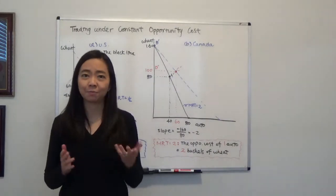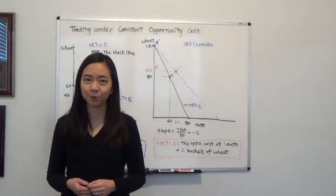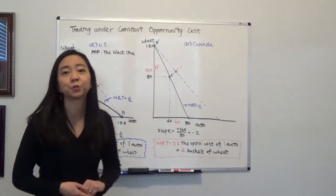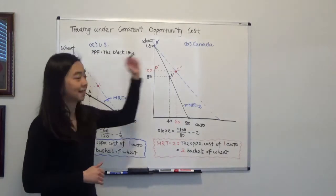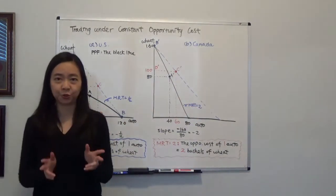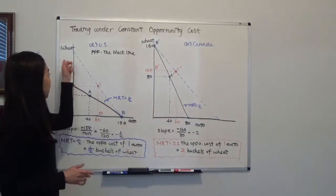Now for your reference, I'm using Robert Carbone's international economics textbook and this is figure 2.1. So now suppose we have two countries, the US and Canada, and we only produce two goods, automobiles and wheat.